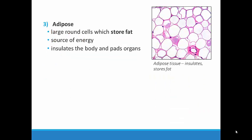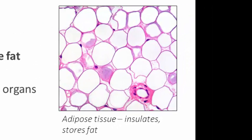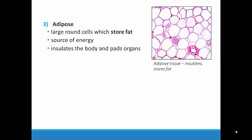The third type of connective tissue is called adipose tissue, which is also known as fat. You can see that these cells are large and round. If you look closely, you can see how the nuclei have been pushed to the sides of the cell, which allows more room for fat storage. Adipose tissue has several essential roles in the body. First, it can act as a form of stored energy. It is also important because it insulates the body and provides a protective covering around the organs.